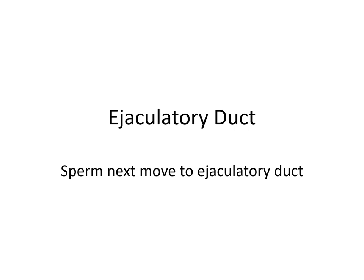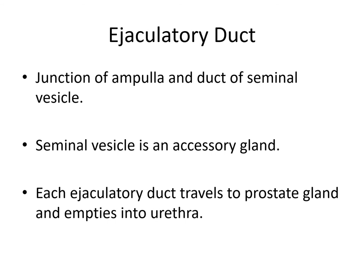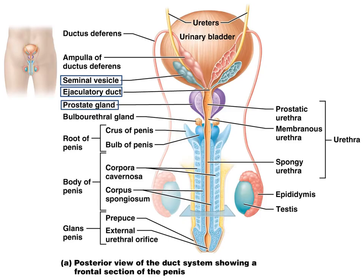Sperm move next to the ejaculatory duct, which is the junction of the ampulla and the duct of the seminal vesicle. The seminal vesicle is the very first accessory gland we come to. Each ejaculatory duct travels to the prostate gland and empties into the urethra. Here's the seminal vesicle and the ampulla joining together into the ejaculatory duct, which then passes inside the prostate gland.